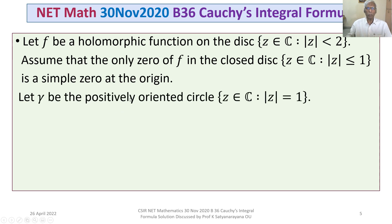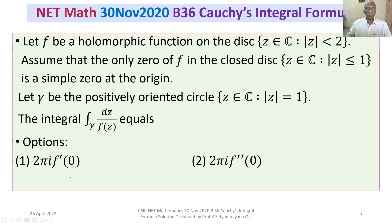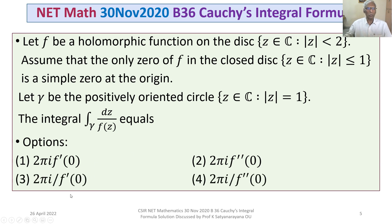Let gamma be a positively oriented circle, that is, the set of all Z in C such that mod Z equals 1 — the unit circle. The integral taken around gamma of dZ by F(Z) equals one of four options: option 1: 2πi times F'(0); option 2: 2πi times F''(0); option 3: 2πi by F'(0); option 4: 2πi by F''(0).